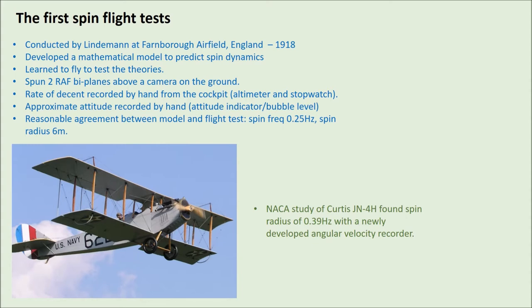He conducted spin tests of two RAF biplanes by putting a camera on the ground and performing the spins above it, trying to reconstruct characteristics of the spin like the spin radius. He also took other data by hand in the cockpit — jotting down information from the altimeter and using a stopwatch. He was able to record the approximate attitude of the aircraft, giving some indication of the angle of attack by monitoring the attitude indicator. He found that his flight tests agreed pretty well with his mathematical model, and he observed a spin frequency of 0.25 Hz — meaning each spin took about four seconds.